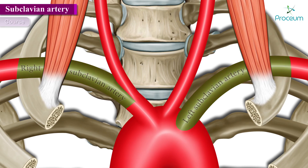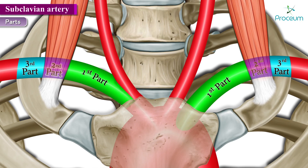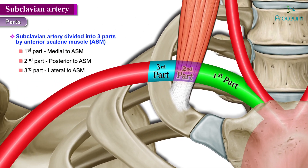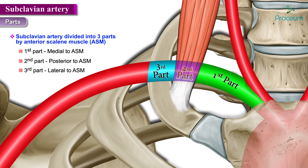Now let us discuss the parts of the subclavian artery. Each subclavian artery is made up of three parts, defined in relation to the anterior scalene muscle of the neck, because this muscle divides the artery into three parts. These three parts give rise to tributaries supplying the neck and brain.